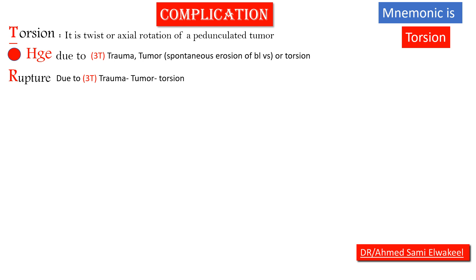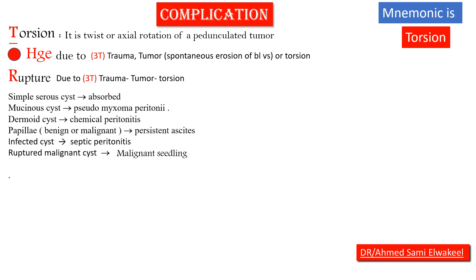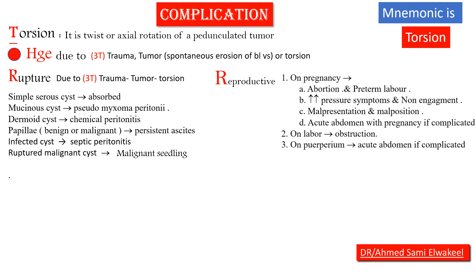R for rupture, also due to the 3 Ts: trauma, tumor, and torsion. Complications of rupture depend on the cyst content: serous cysts — content is absorbed; mucinous cysts — lead to pseudomyxoma peritonei; dermoid cysts — lead to chemical peritonitis; infected cysts — lead to septic peritonitis; ruptured malignant cysts — lead to malignant seeding.